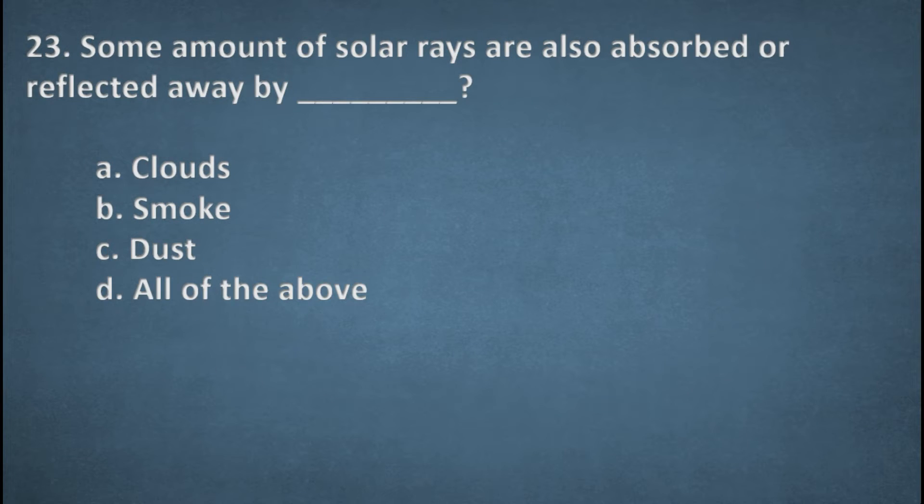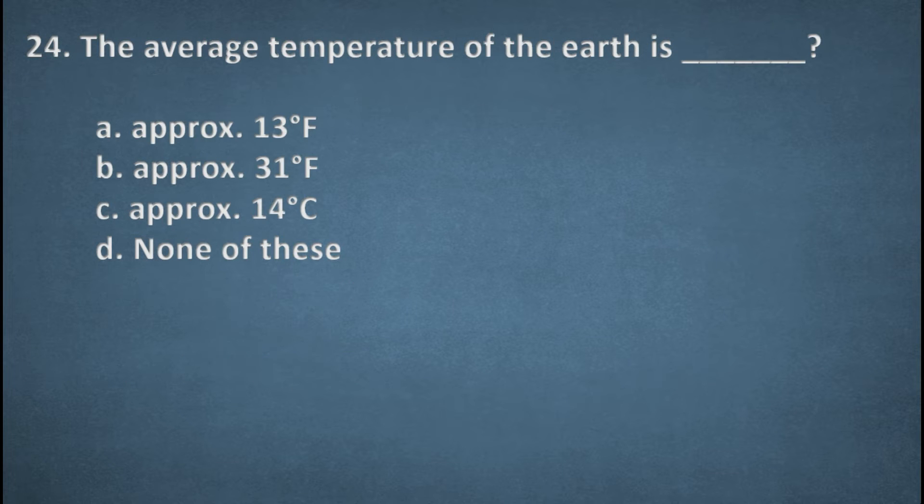Next one. Some amount of solar rays are also absorbed or reflected away by. Options: Clouds, Smoke, Dust, All of the above. Right option, D, All of the above. Next one. The average temperature of the earth is. Options: Approx. 13 degree Fahrenheit, Approximate 31 degree Fahrenheit, Approximate 14 degree Celsius, None of these. The right option, C, Approximate 14 degree Celsius.